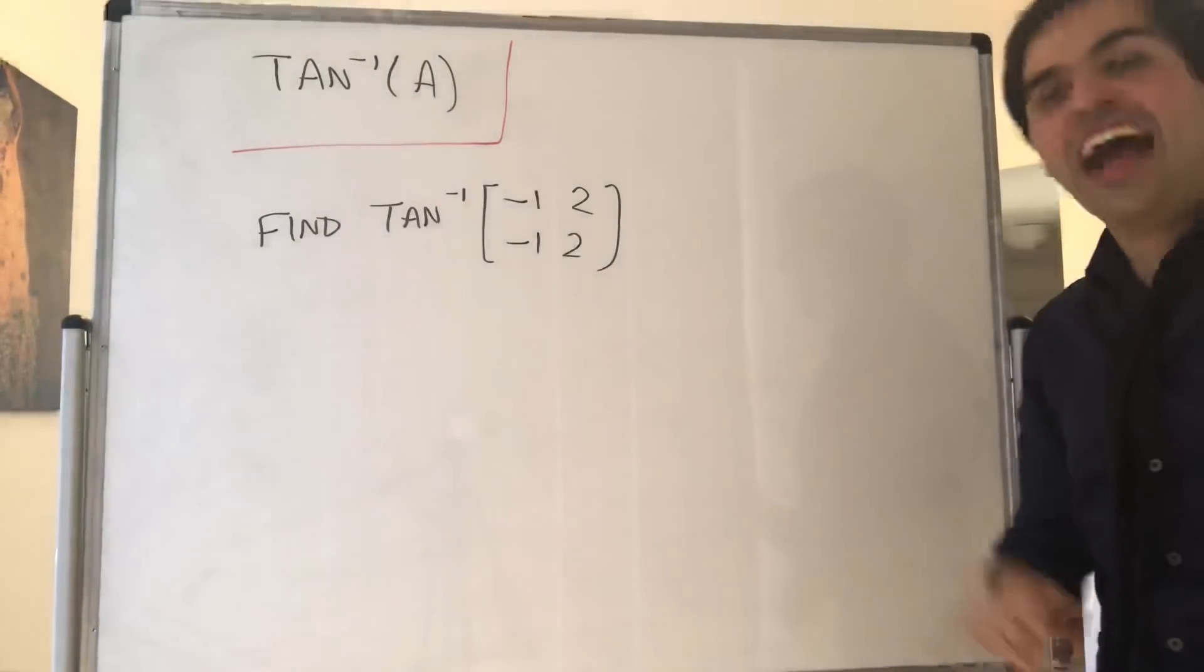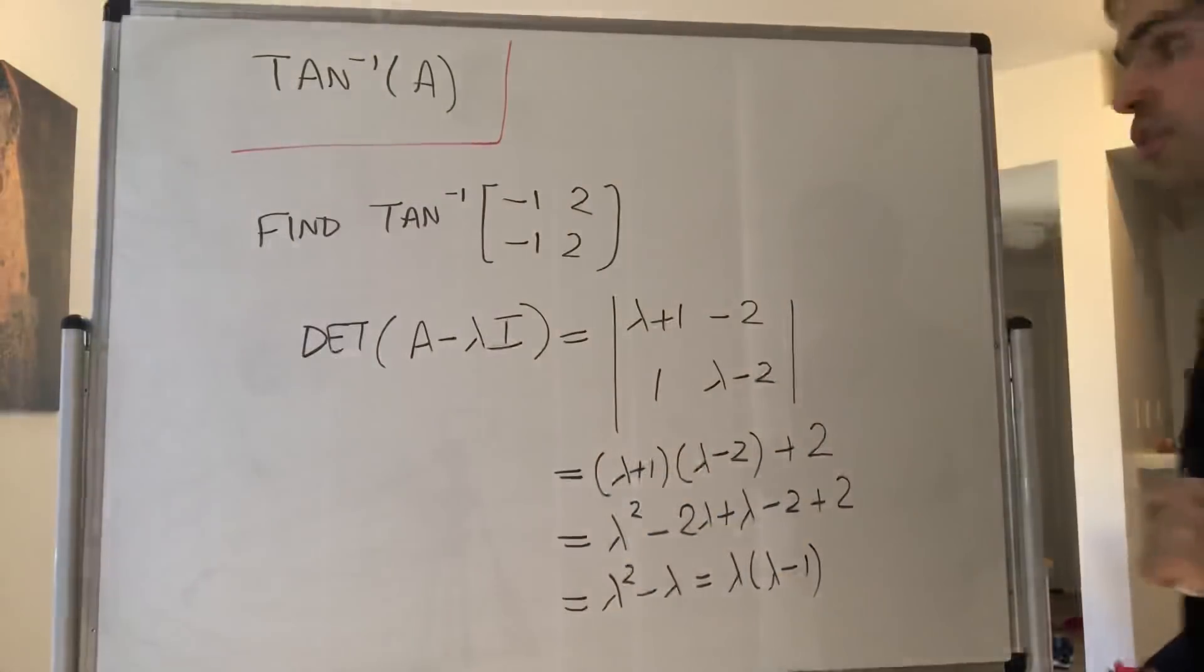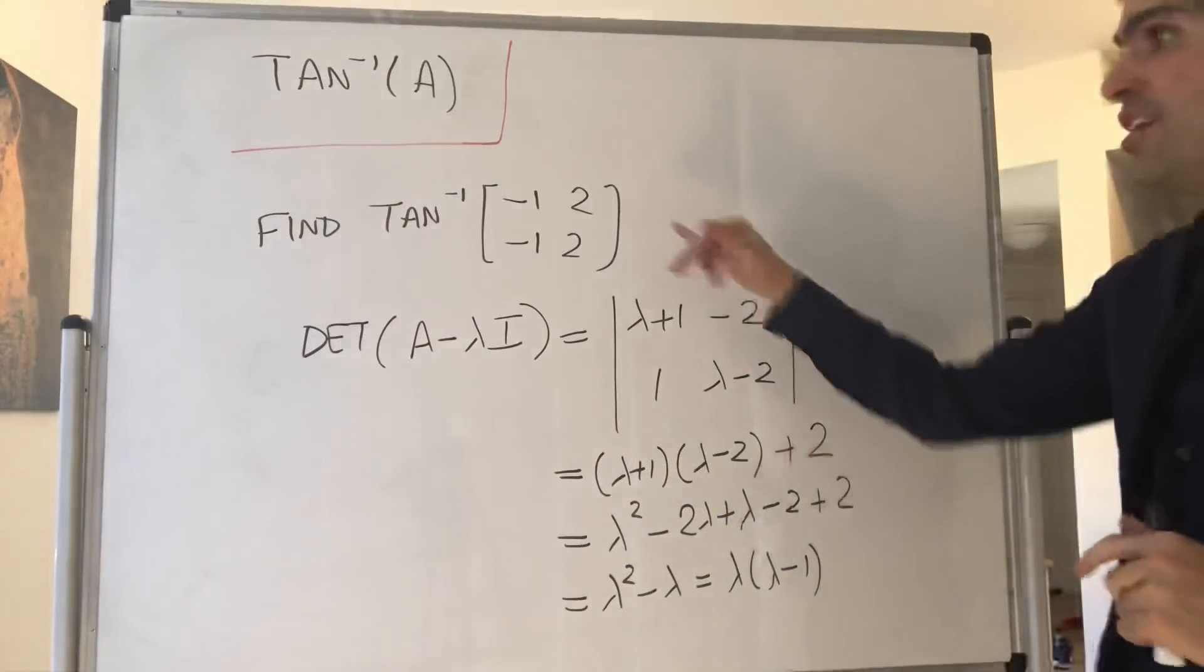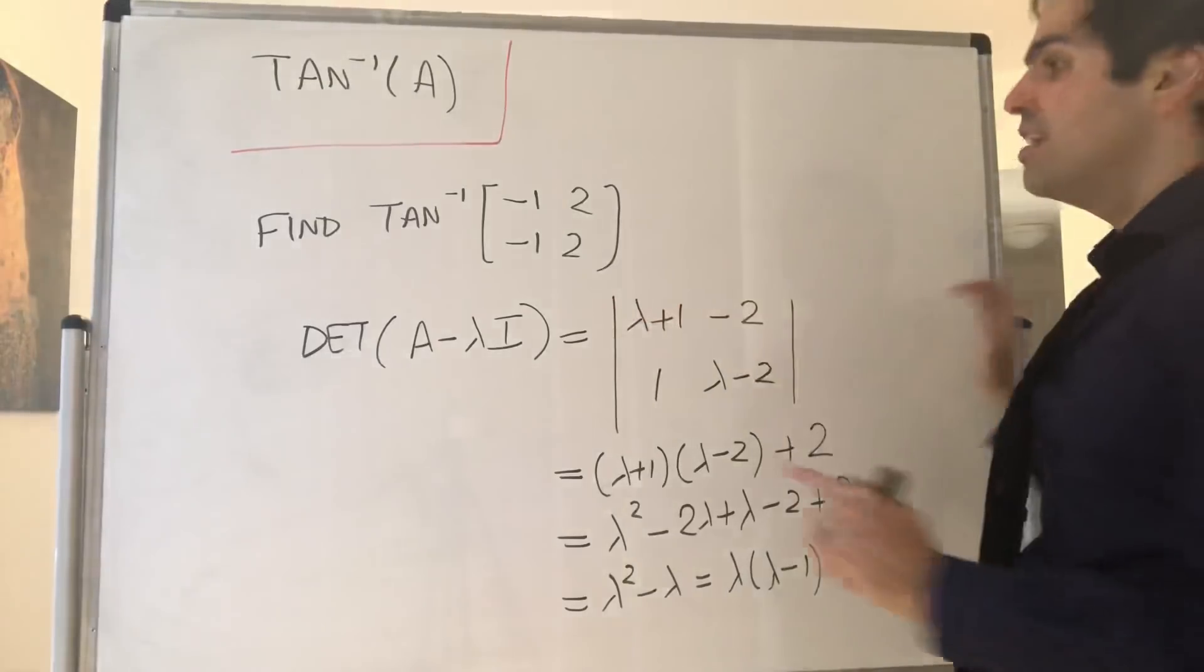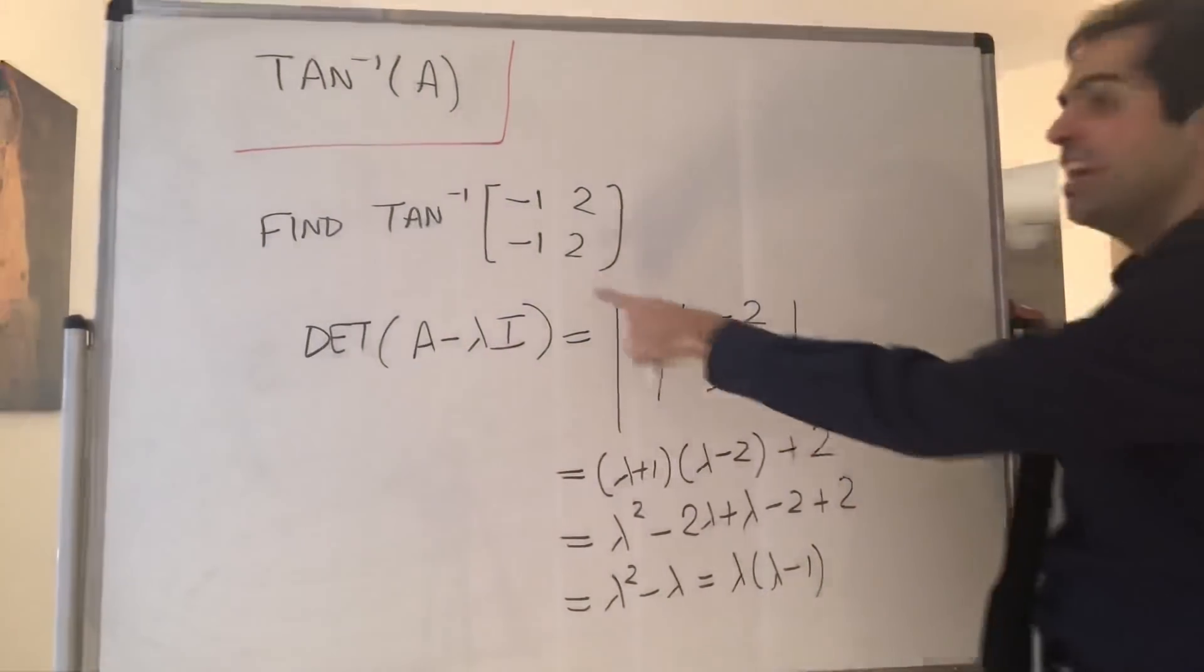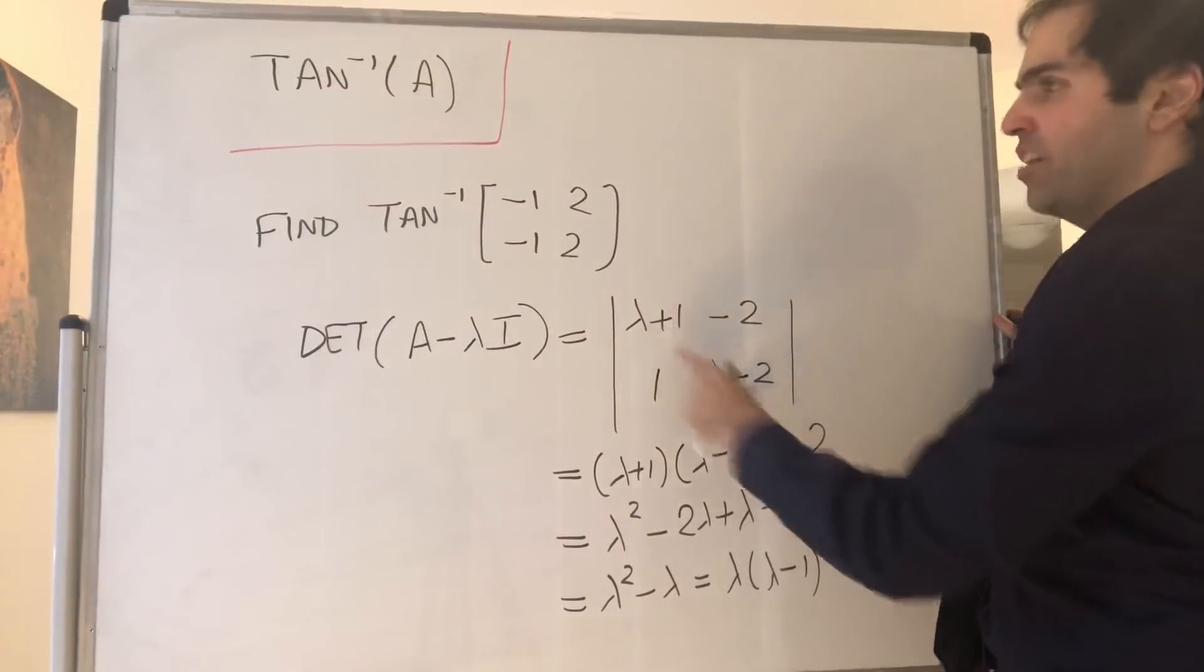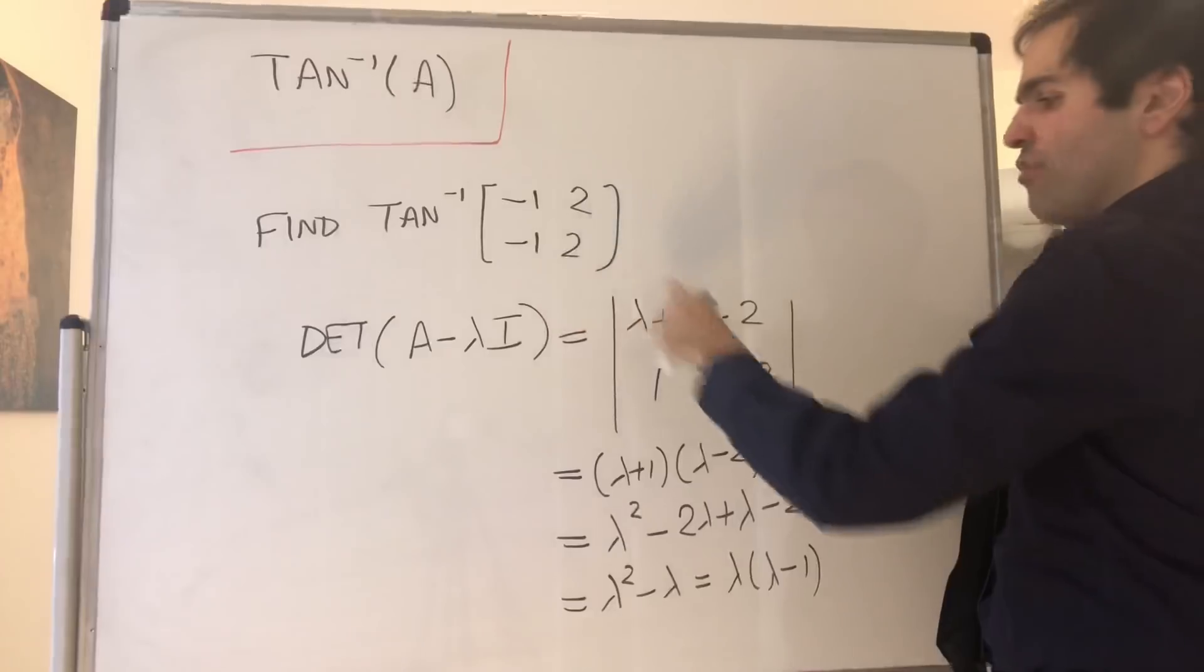So for this, let's diagonalize the matrix [-1, 2; -1, 2]. Remember how to diagonalize a matrix: first find the eigenvalues, and for this calculate the determinant of A minus lambda I, where A is this matrix. So you put lambdas on the diagonal and minus signs everywhere here.